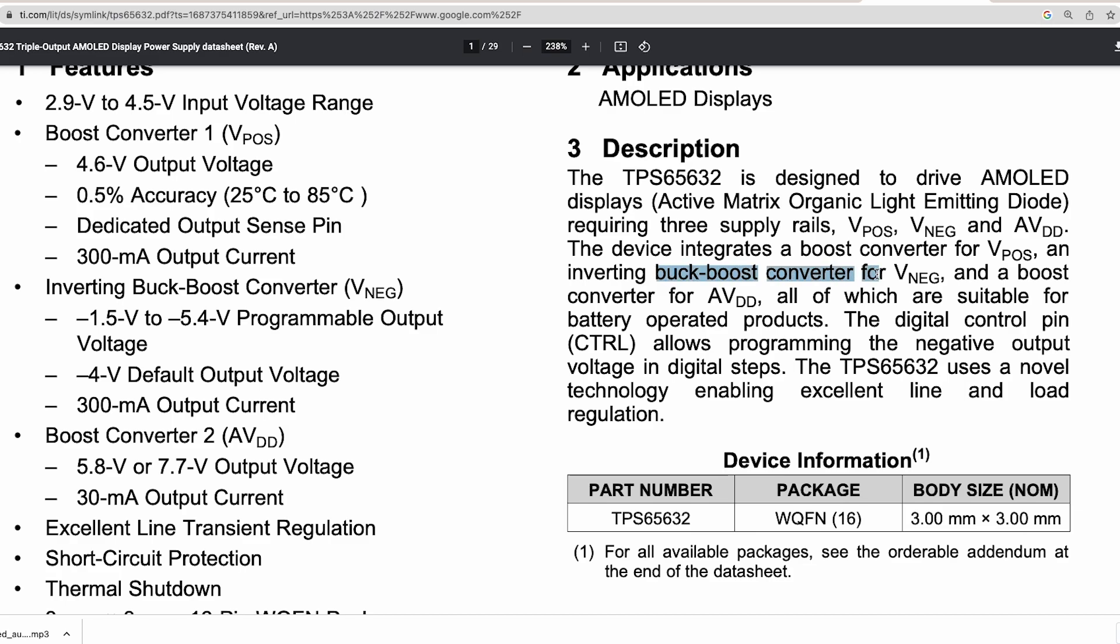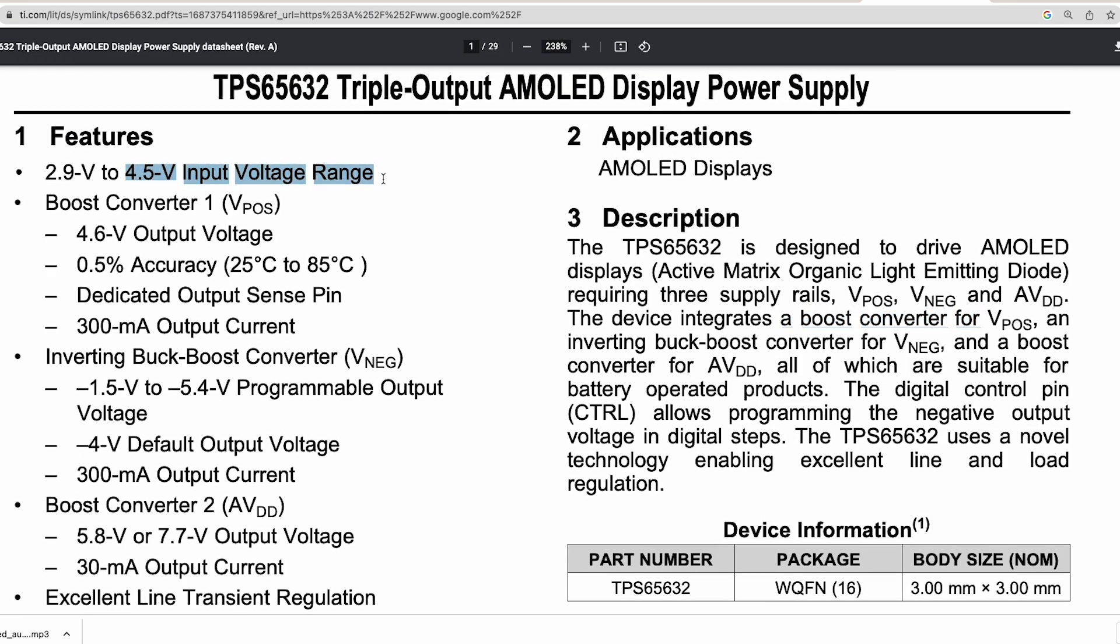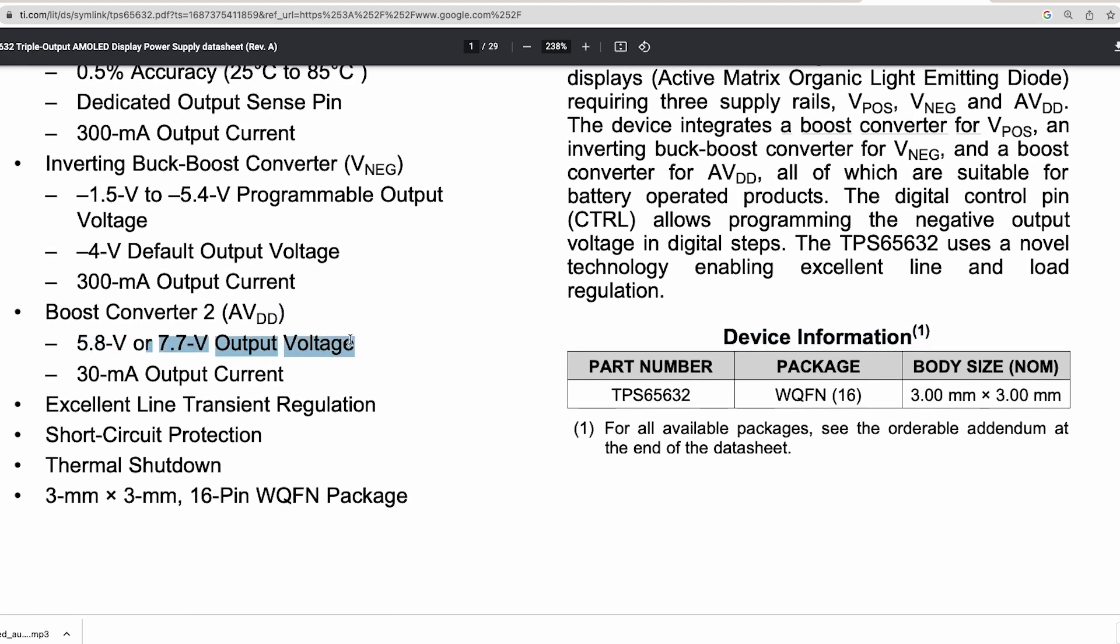The boost converter takes a lower input voltage and boosts it to a higher output voltage. For example, it can take 4.5 volts and convert them into 7.7 volts. Interesting!